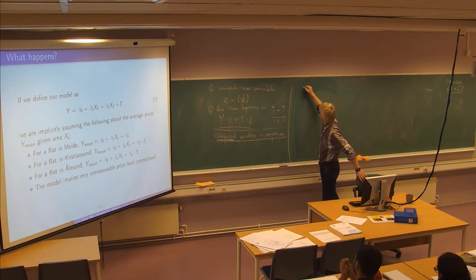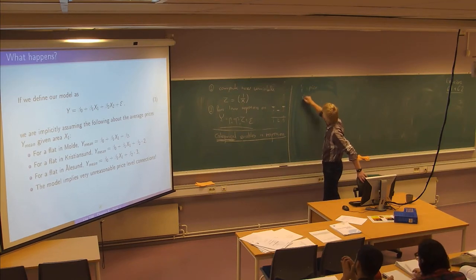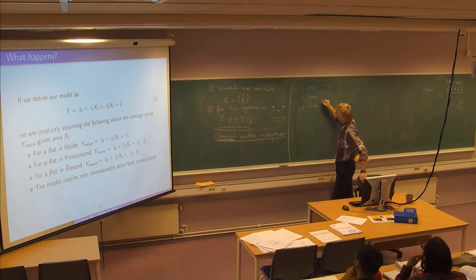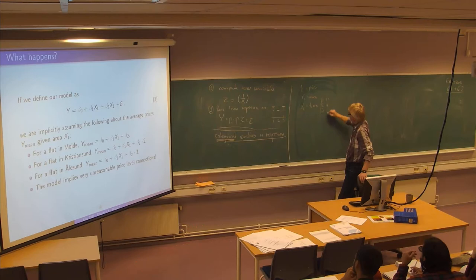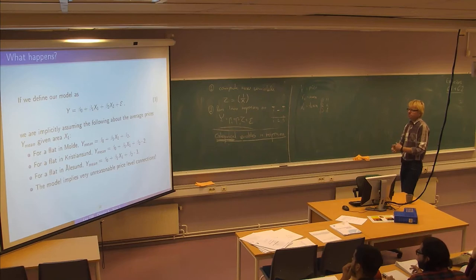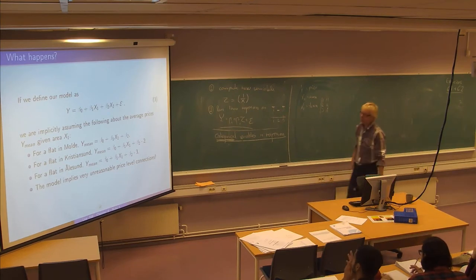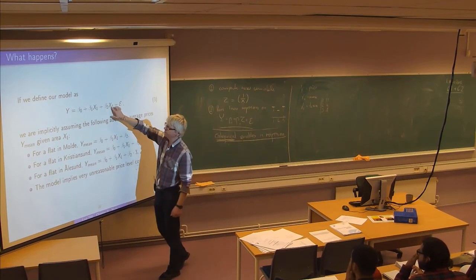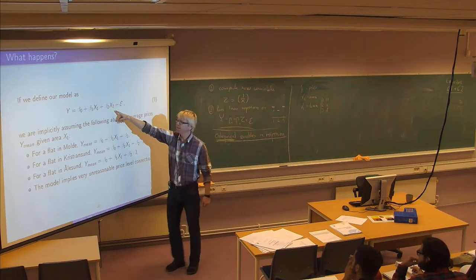So y is the price, x1 is the area, and x2 is the town, which is 1, 2, or 3 for our three towns: Molde, Kristiansund, and Ålesund. Very naively, you could try to insert this numerical code in as a second variable.